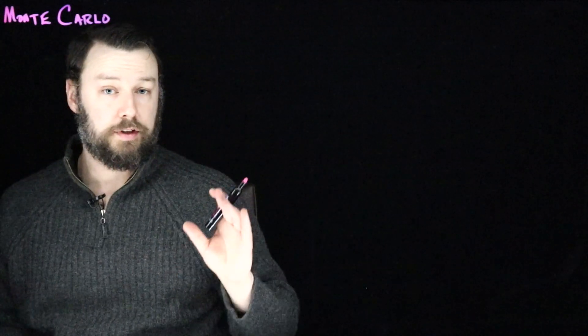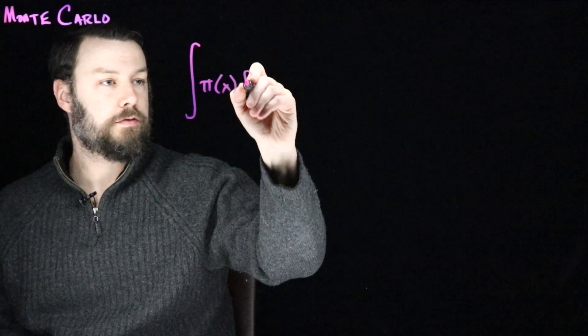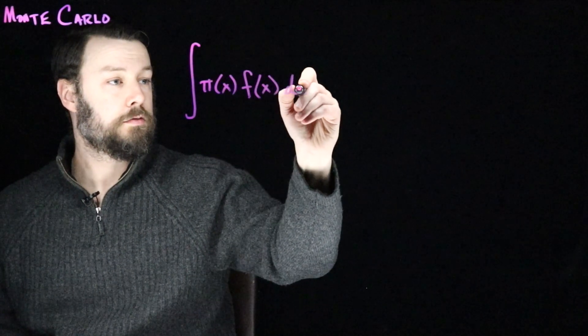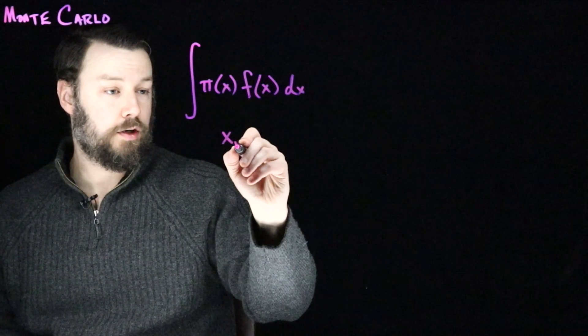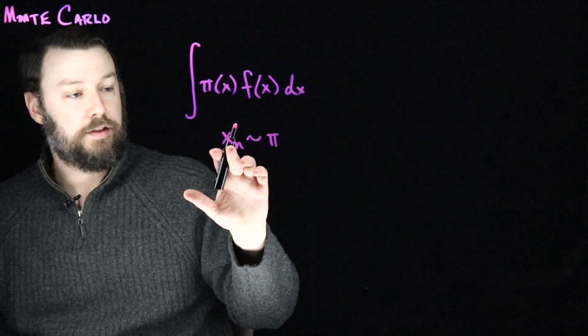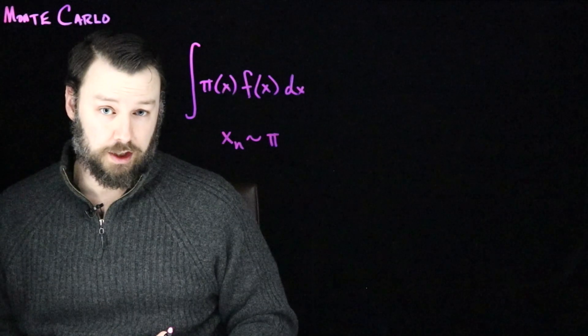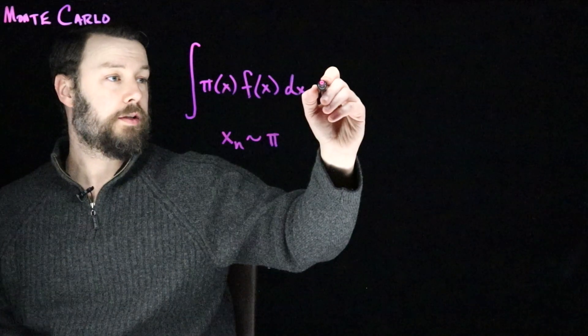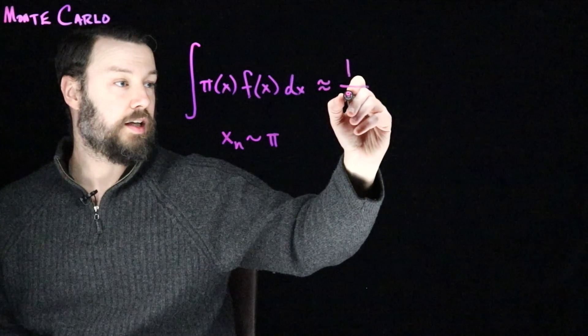The Monte Carlo principle is the idea that if I have an integral like this that is an expectation, and I can draw samples—so I imagine that I can draw samples from pi, using this notation to say that I'm drawing some independent samples xn from the distribution pi.